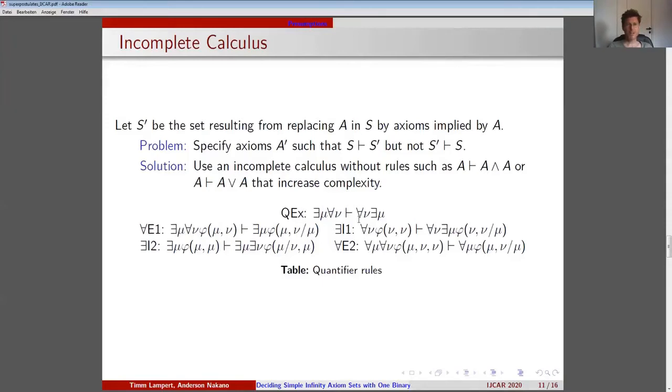Let S' be the set of axioms that results from replacing A in S by axioms implied by A. Our problem is to specify axioms A' such that S implies S' but S' does not imply S. So S strictly implies S' and S' is strictly weaker than S. We solve this problem by making use of an incomplete calculus without rules such as 'A implies A and A' or 'A implies A or A' that increase complexity.